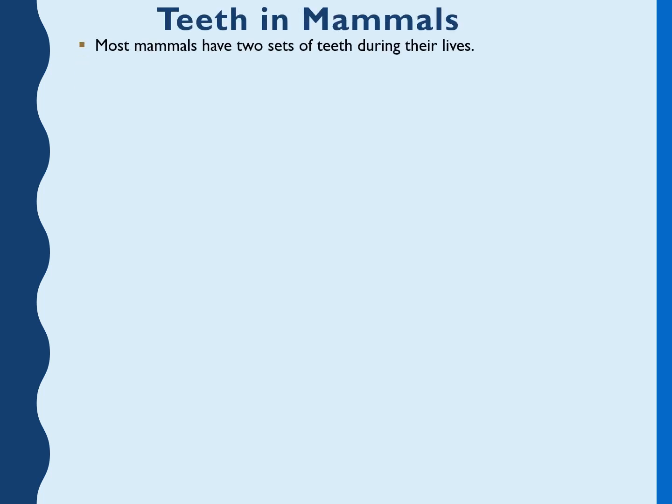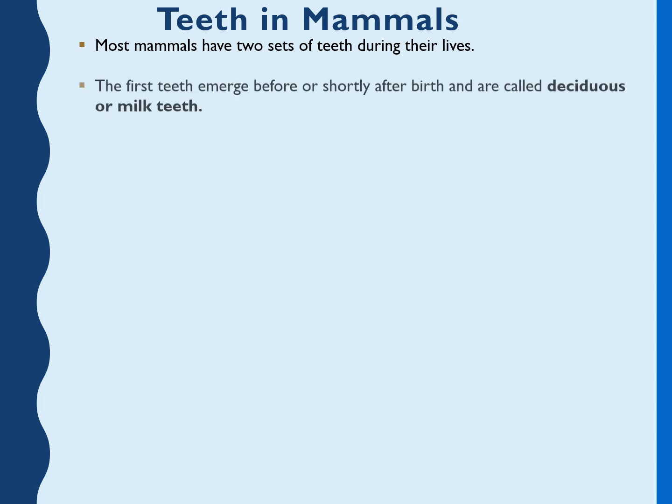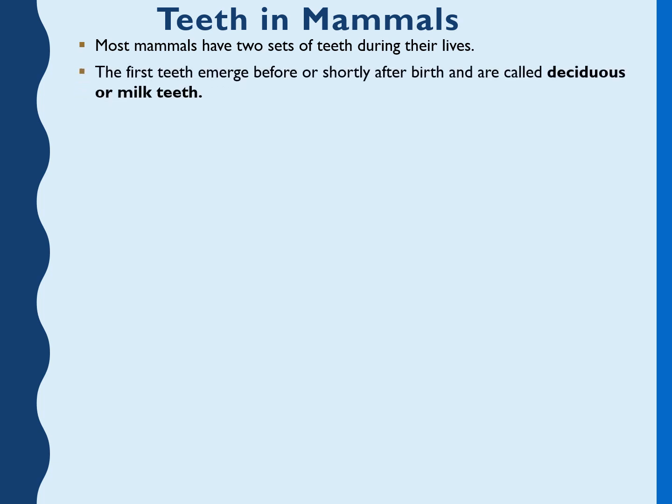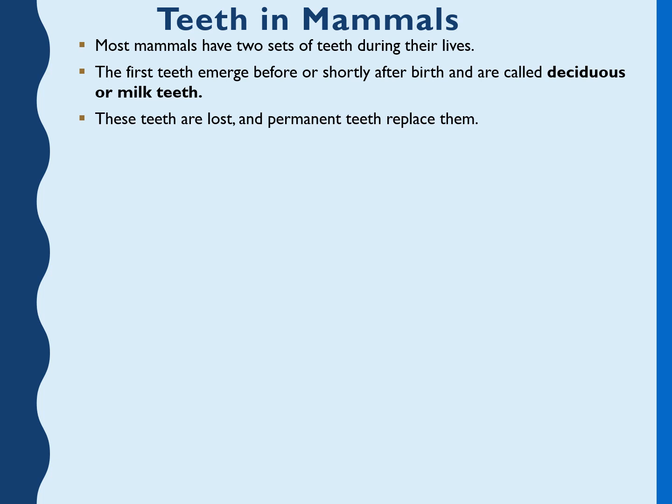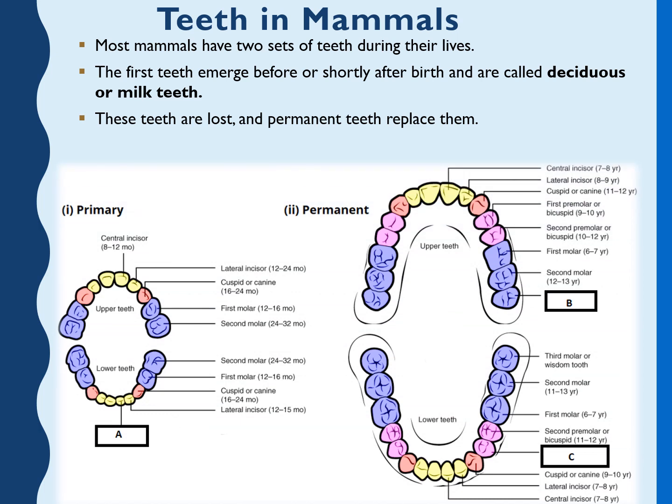Mammals have two sets of teeth during their lives. The first set emerges before or shortly after birth — we call these deciduous or milk teeth. These teeth are later lost and replaced by permanent teeth — similar to the concept of primary teeth and permanent teeth.